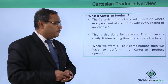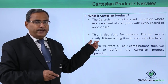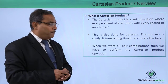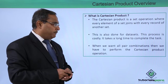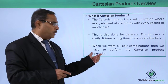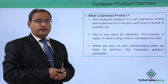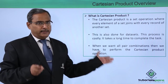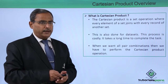It is also done for data sets and this process is very costly and it takes a long time to complete the task. When we want all pair combinations, then we have to perform the Cartesian product operations. So whenever you are trying to get the combinations of all records between two data sets, then the Cartesian product is the only one operation to be carried out.